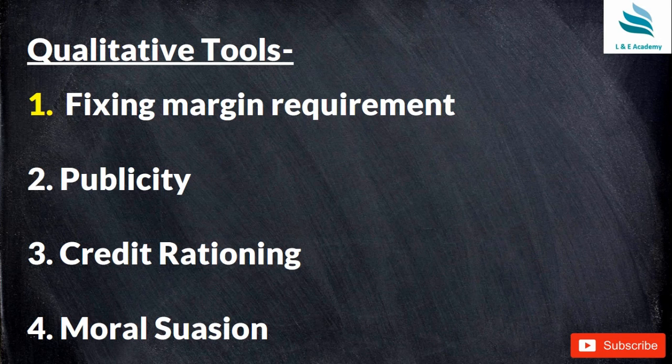Now let us talk about the qualitative tools. Qualitative measures are those which cannot be counted in numbers or shown in facts and figures, but they are very important measures which RBI takes to control the monetary policy. The first qualitative tool is fixing the margin requirement.